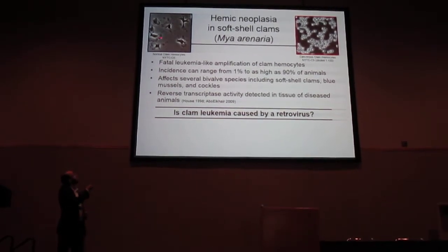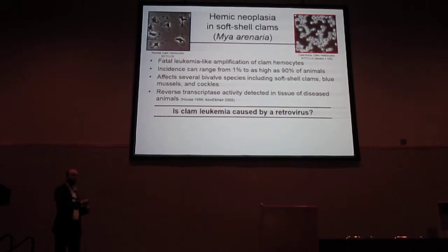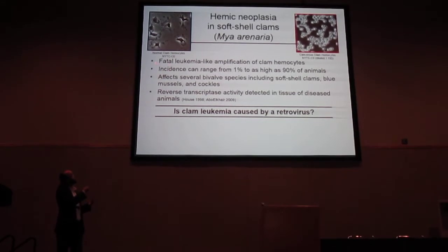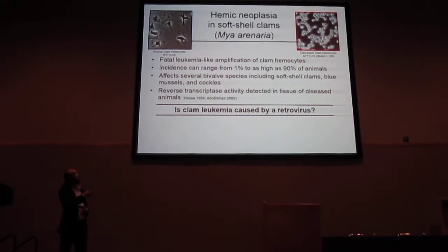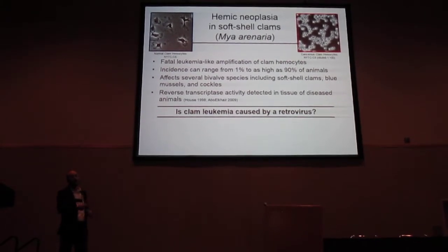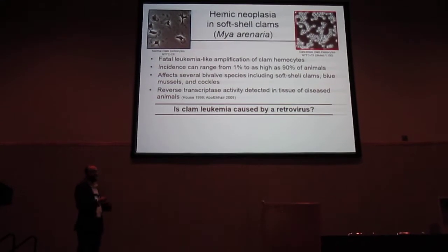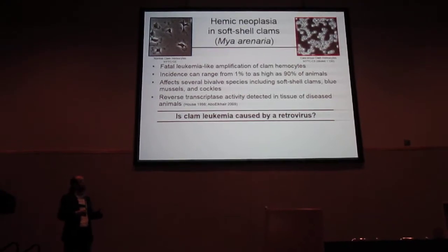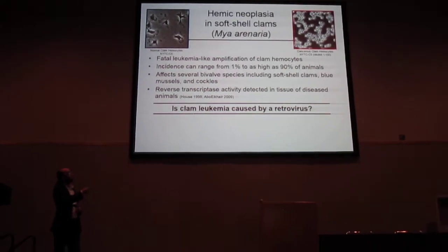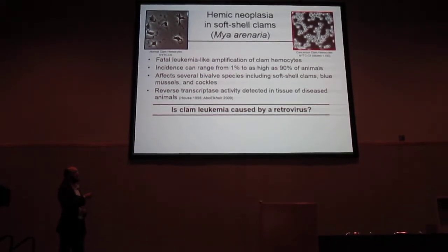Clam hemocytes — the normal hemocytes are shown here — are phagocytic cells. You can draw the hemolymph out of a clam, put it on a dish, and these hemocytes will adhere quite tightly; you can see the pseudopodia spread out. But when you look at hemocytes from a diseased animal, they're rounded and refractile — completely different morphology — and they're actually massively amplified within the hemolymph itself, disseminating through all the tissues. This is actually diluted 1 to 100; when you look at the hemolymph directly, it's just filled with cells, and that leads to the death of the clam.